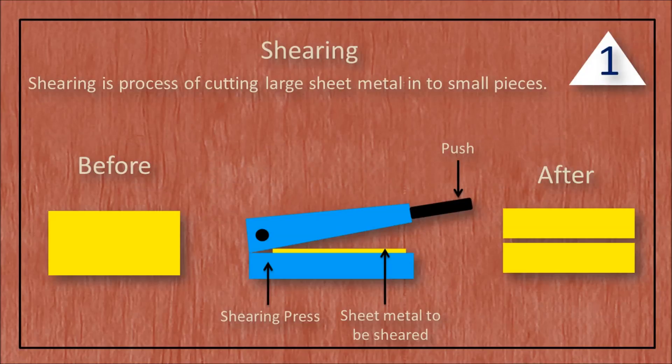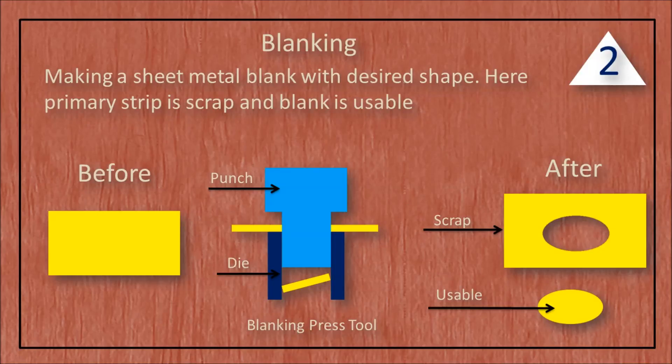Shearing is a process of cutting large sheet metal into small pieces. Blanking is a process of making a sheet metal blank with desired shape. Here the primary strip is scrap and the blank is usable.